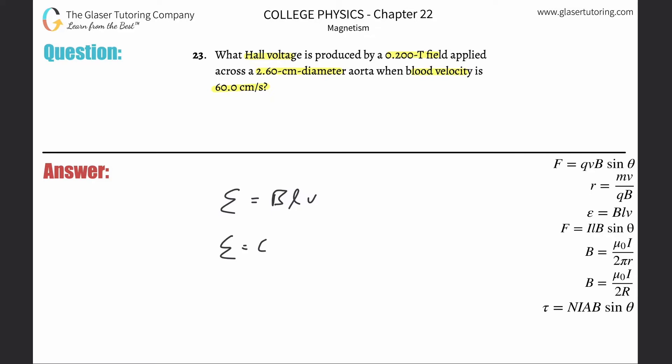So B here is going to be 0.2 tesla. That's in the right unit. Then they give us the diameter in centimeters, but we need that in meters. So you're going to take 2.6 and multiply it by 10 to the minus two. And same thing with the blood velocity. They give it to you in centimeters per second, but we need that in meters per second. So that's going to be 60 times 10 to the minus two as well.